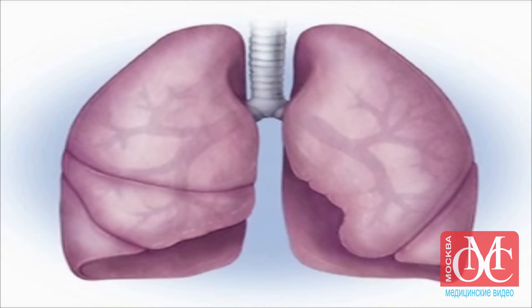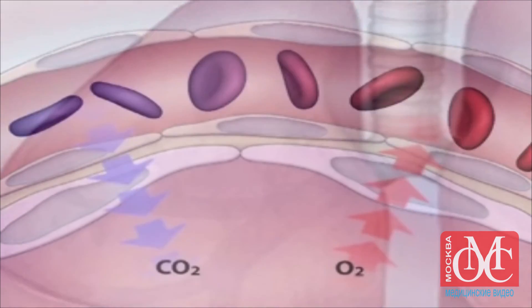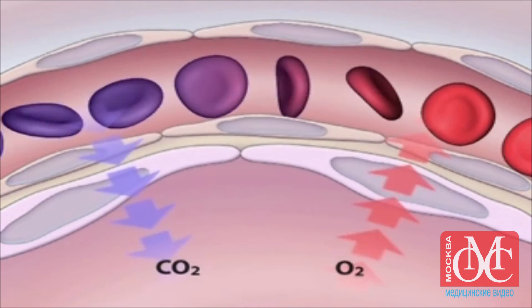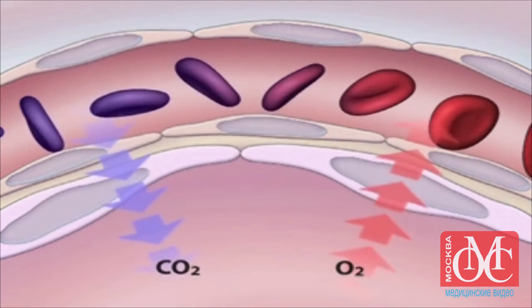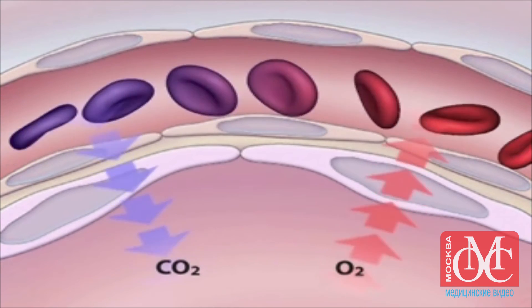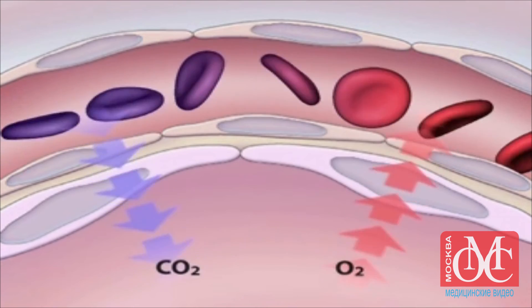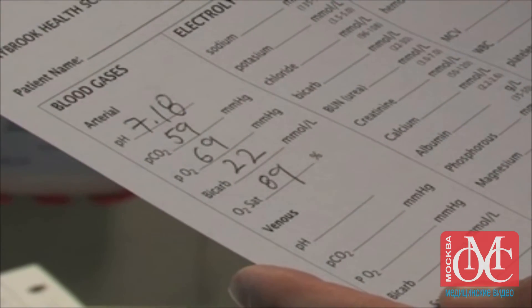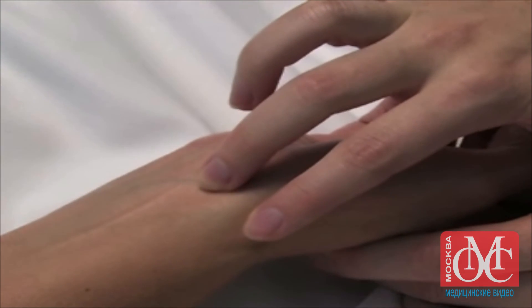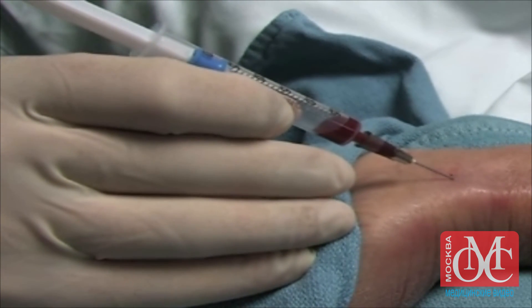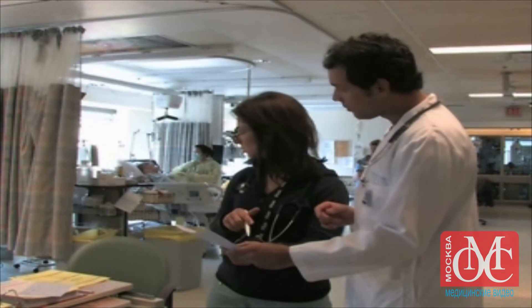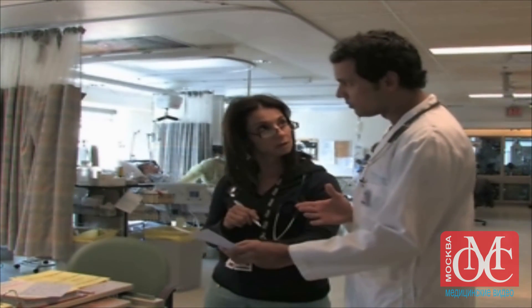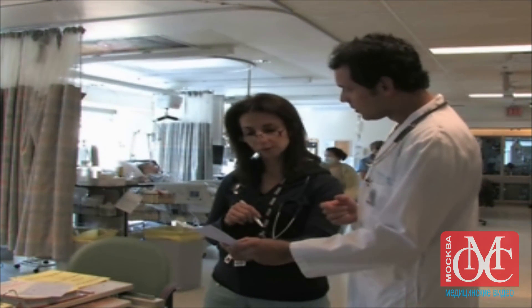Arterial blood gas analysis provides useful information regarding respiratory and metabolic pathology. The partial pressure of carbon dioxide, bicarbonate concentrations, and pH values will assist in diagnosing the presence of primary or mixed respiratory and metabolic acidosis or alkaloses. The partial pressure of oxygen will reveal abnormalities in blood oxygen content and the presence of hypoxemia. With the appropriate technique, radial arterial puncture for arterial blood gas analysis is a skill easily mastered by medical trainees. A more detailed approach to acid-base disorders and hypoxemic respiratory failure, while necessary, is beyond the scope of this instructional video.